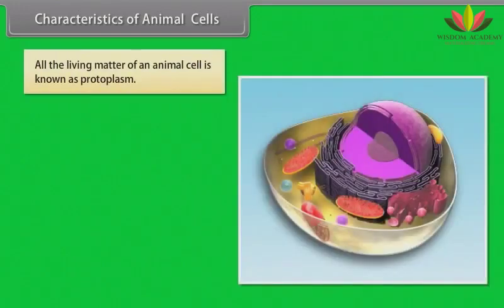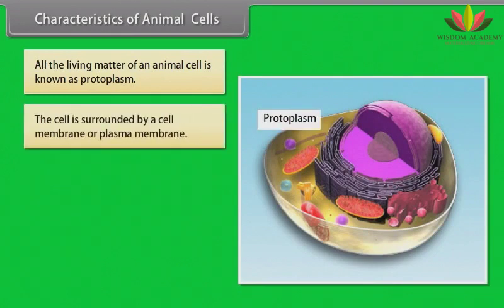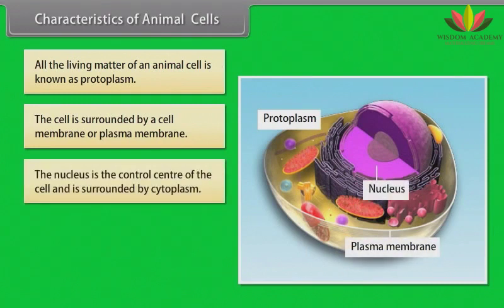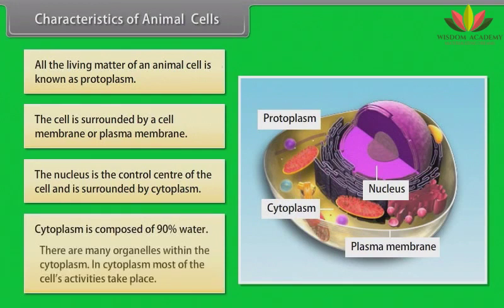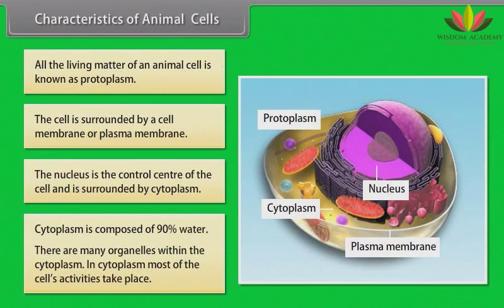All the living matter of an animal cell is known as protoplasm. The cell is surrounded by a cell membrane or plasma membrane. The nucleus is the control center of the cell and is surrounded by cytoplasm. Cytoplasm is composed of 90% water. There are many organelles within the cytoplasm, and most of the cell's activities take place in the cytoplasm.